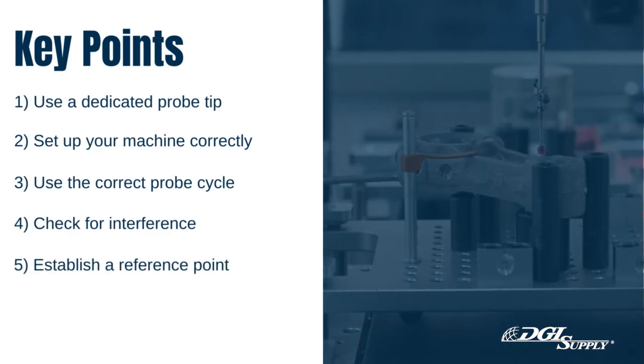Number 5: Establish a reference point. It's important to establish a reference point for your probe cycle, such as the center of a hole or the top of a workpiece. This will help ensure that the probe readings are accurate.